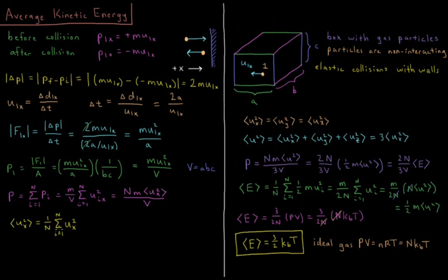If we sum Uᵢₓ² over all particles and divide by the number of particles N, that is the average square velocity in the X direction. Since there's a factor of 1/N, we bring in a factor of N to cancel it. This gives us the pressure resulting from velocity in the X direction and collisions with the walls.